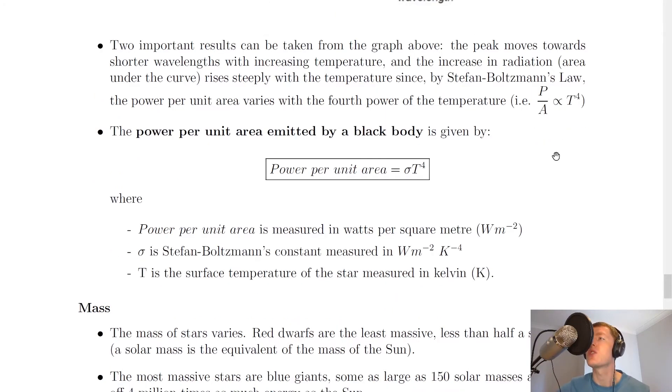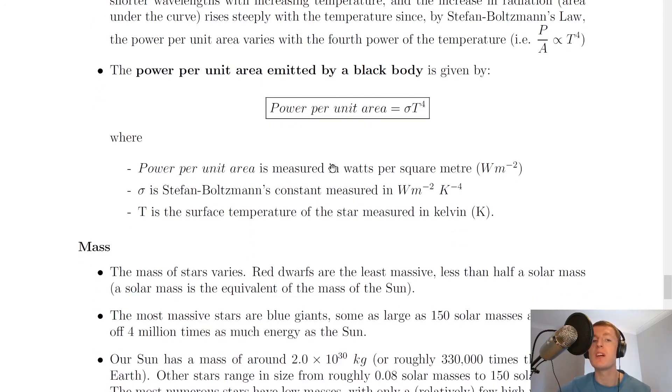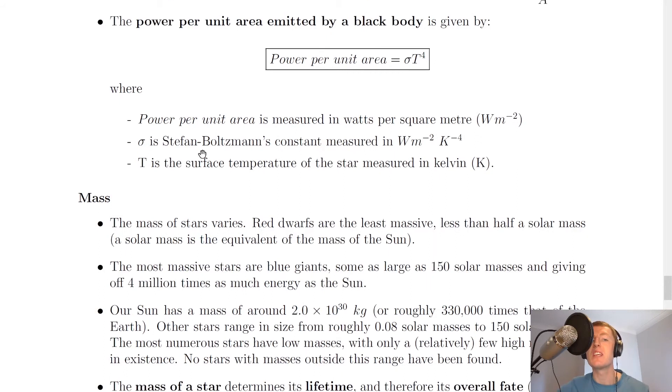This relationship leads us to an equation. This is an equation you get on the relationship sheet in the exam, and it's for the power per unit area emitted by a black body. The power per unit area, which you could give the symbol p divided by a, is equal to sigma T to the 4, where power per unit area is measured in watts per square meter. Sigma is Stefan-Boltzmann's constant measured in watts per meter squared per kelvin to the 4, and that constant value you'll find on the data sheet. And T is the surface temperature of the star measured in kelvin.